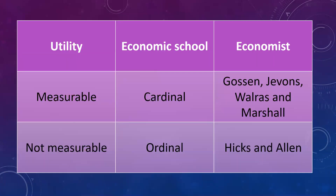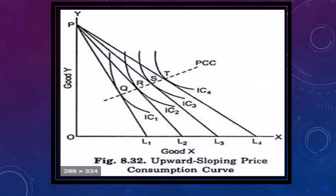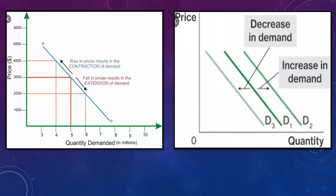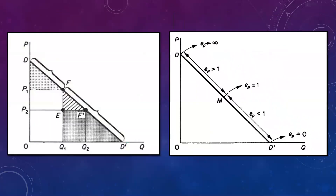First is microeconomics. Before going to the exam, have a look at these topics: utility — two schools, cardinal and ordinal — and which are the economics in both cardinal theory and ordinal theory. Next is the indifference curve, PPC curve — their definitions, and what is meant by the point of tangency between the isocost and indifference curve.